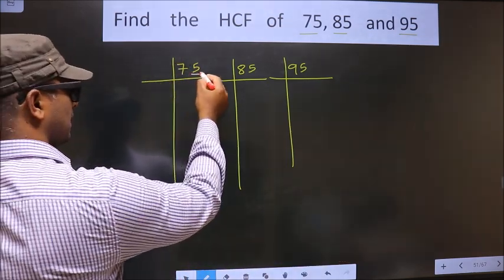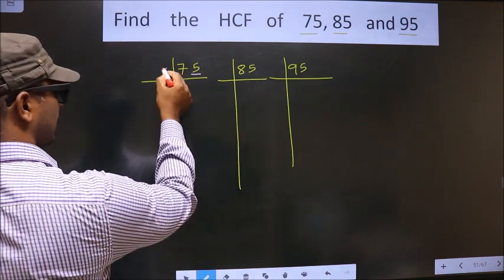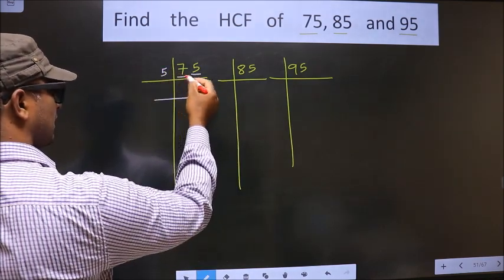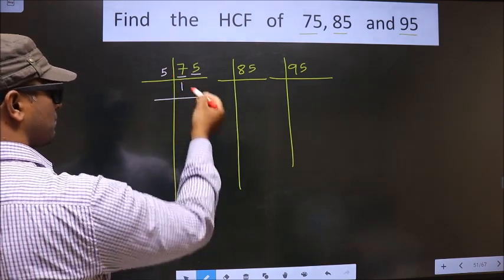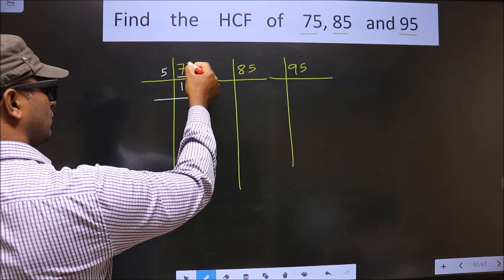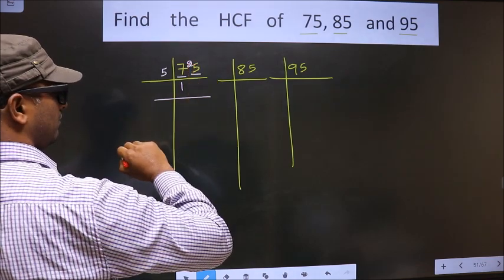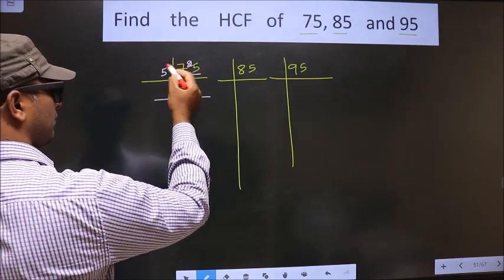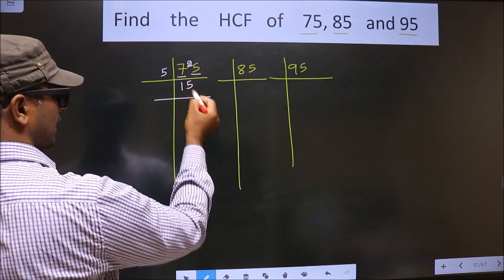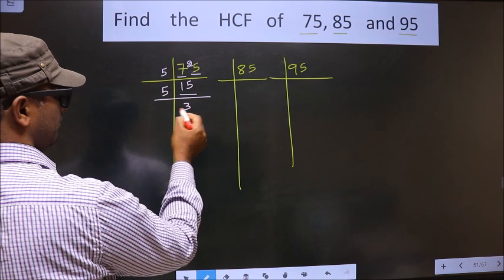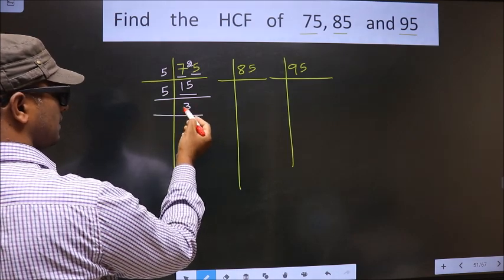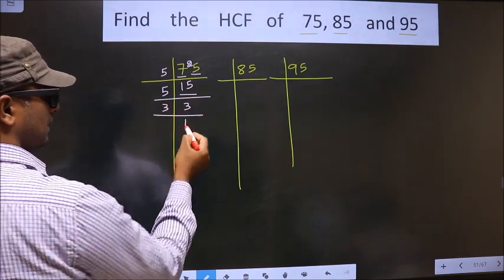For this number, last digit is 5, so we take 5 here. First number is 7. Our number close to 7 in five table is 5 once 5. 7 minus 5 is 2, carried forward making it 25. 5 times 5 is 25. Now here we have 15. 15 is nothing but 5 times 3 is 15. Now 3 is a prime number, so we take 3 once 3.